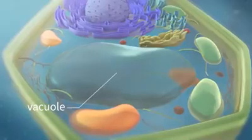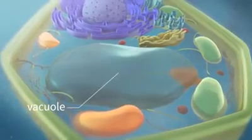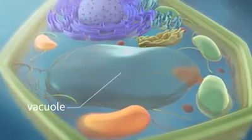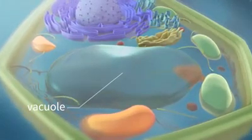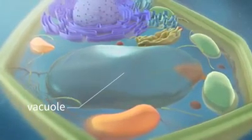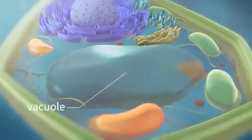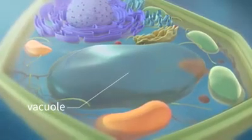Large vacuoles, whose surface often occupies almost the entire cell, are another unique feature of plant cells. Vacuoles can be likened to huge tanks filled with cell sap, containing mainly water and spare substances.